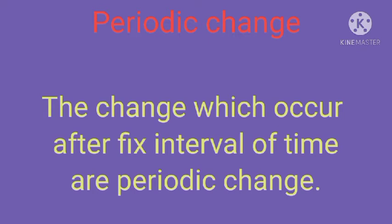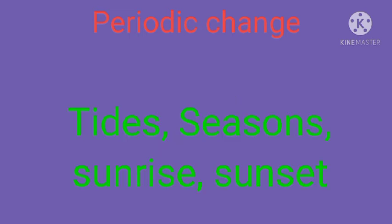Next is the periodic change — these changes happen after a fixed interval of time, repeatedly, whether every minute, every hour, every day, or every year. Such changes are called periodic changes. Examples include tides, seasons, sunrise, and sunset.